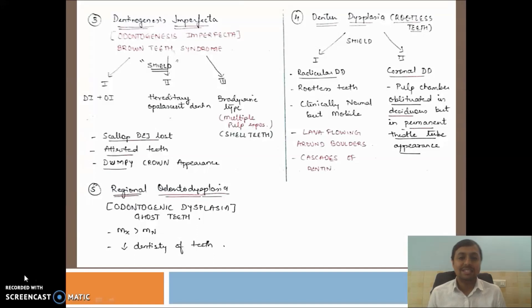Let's go for dentin dysplasia. Rootless teeth. Shields classified it in two types: type 1 and type 2. Remember, type 1 is radicular dentin dysplasia and type 2 is coronal dentin dysplasia. What happens in type 1? There will be rootless teeth. There will be no dentin surrounding the tooth structure. The tooth will appear clinically normal but it will be mobile. When you see the histopathology of such dentin dysplasia teeth, it looks like lava flowing around the boulder. The dentinal tubules will be blocked. Whichever dentin will form, it will form like lava flowing around the boulder. Cascades of dentin will be formed.